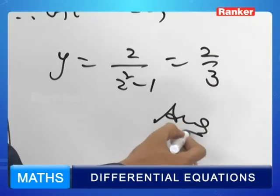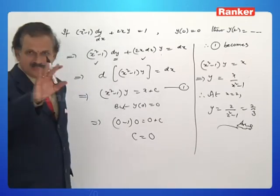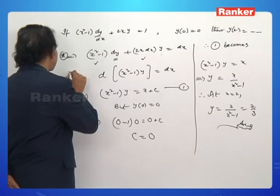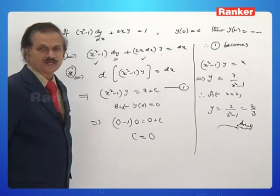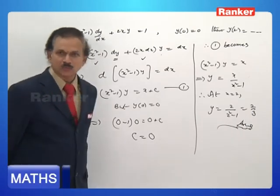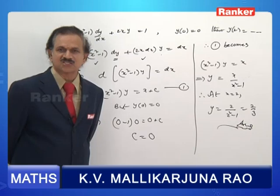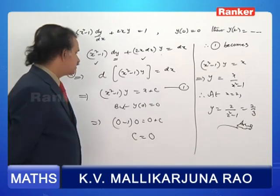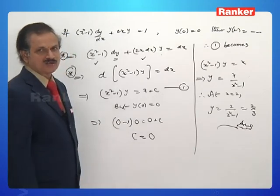That is the answer: y(2) equals 2/3. The key insight is recognizing d[(x²-1)y] equals dx, so that integrating directly gives (x²-1)y equals x plus c. Using the initial condition y(0) equals 0 gives c equals 0, as the curve passes through the origin.